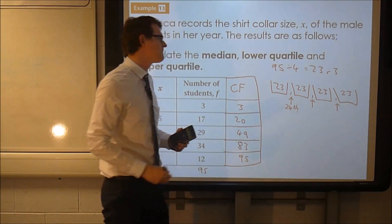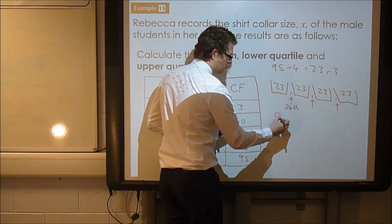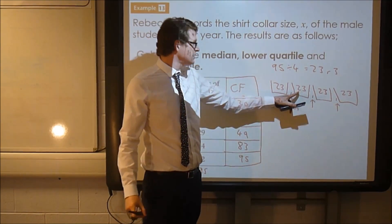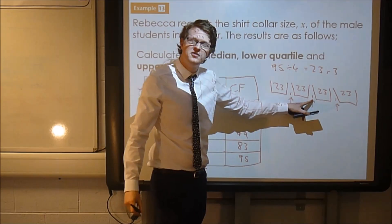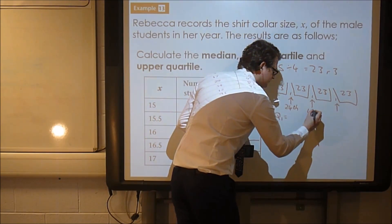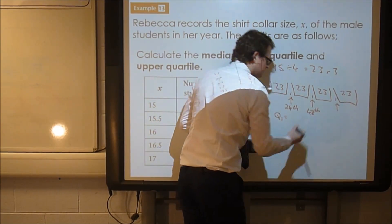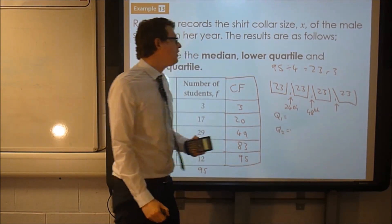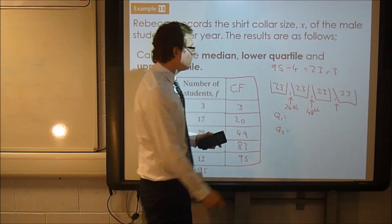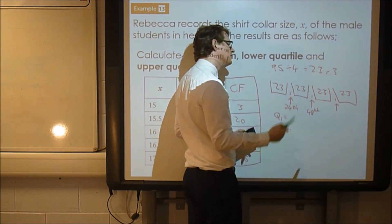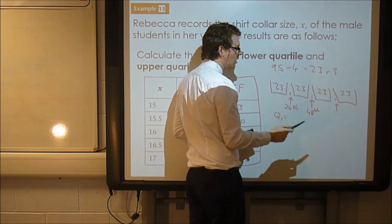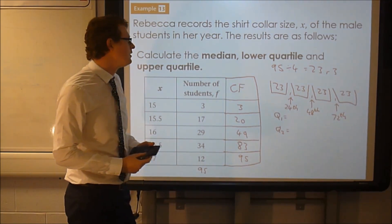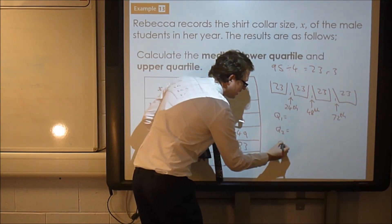So there's 23 bits of data, that's the 24th one. So we have Q1. Here, 23, that's 46, 47, this is the 48th, that's our median, that would be our Q2. And our final one will be 23, 23, that's 69, 70, 71, so this is the 72nd value. That would be our Q3.